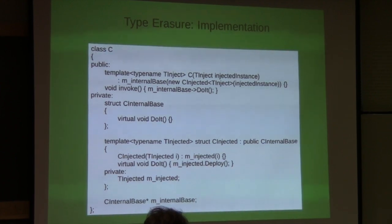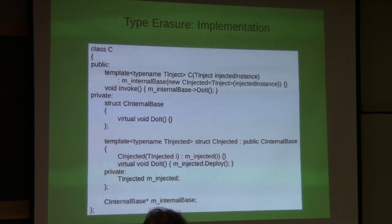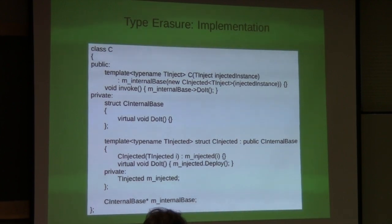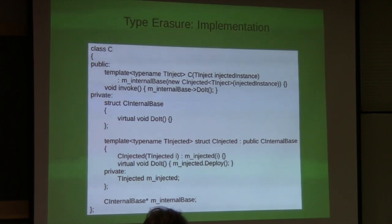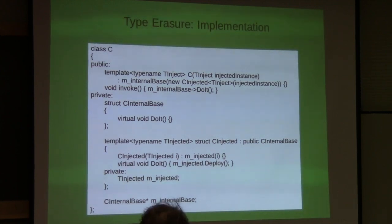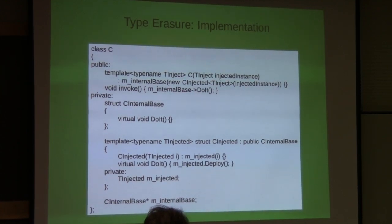So that is the essence of type erasure. You can roll your own where you agree beforehand on the interface. In the case of the shared pointer deleter, the interface is agreed upon - the deleter is going to delete. You can also do your own with your own needs. But the main point is that the interface to the injected class has to be known in advance and agreed upon. That is a limitation.